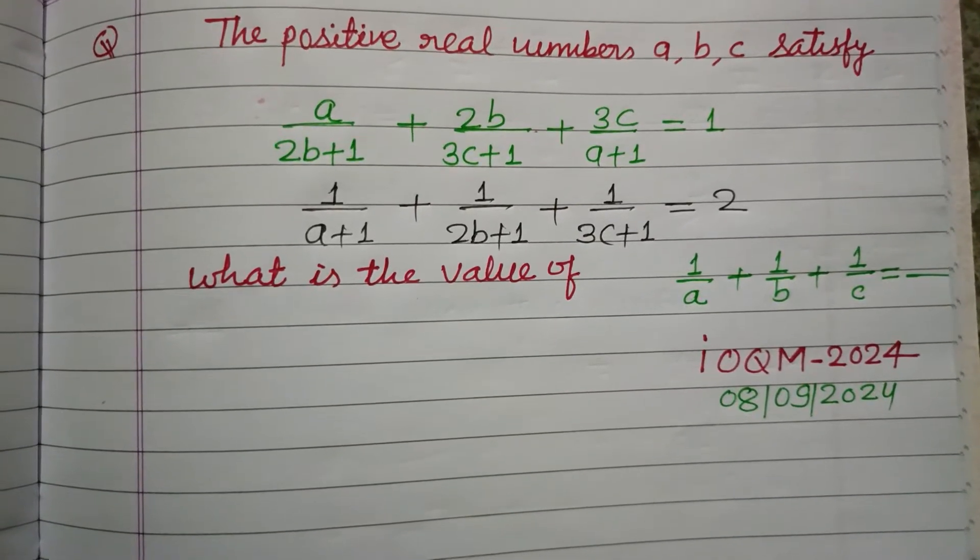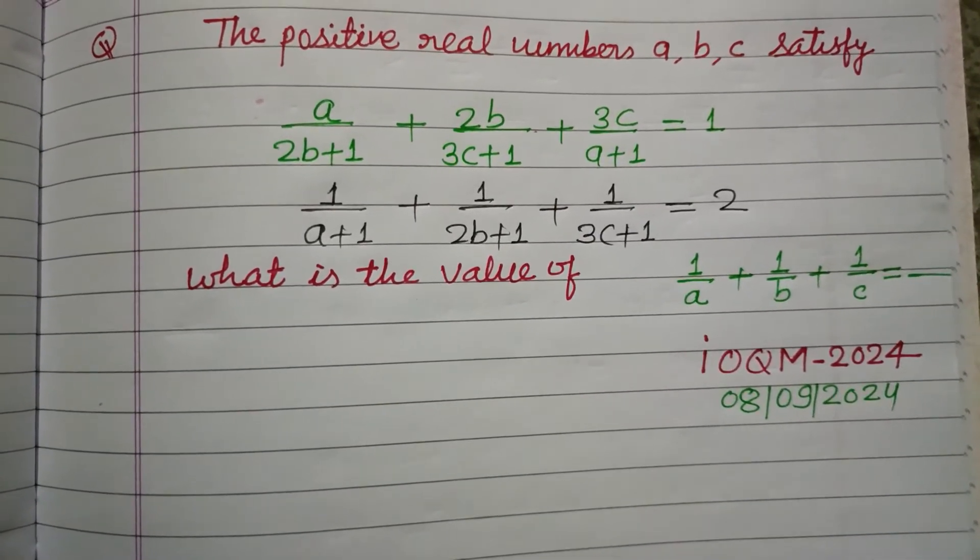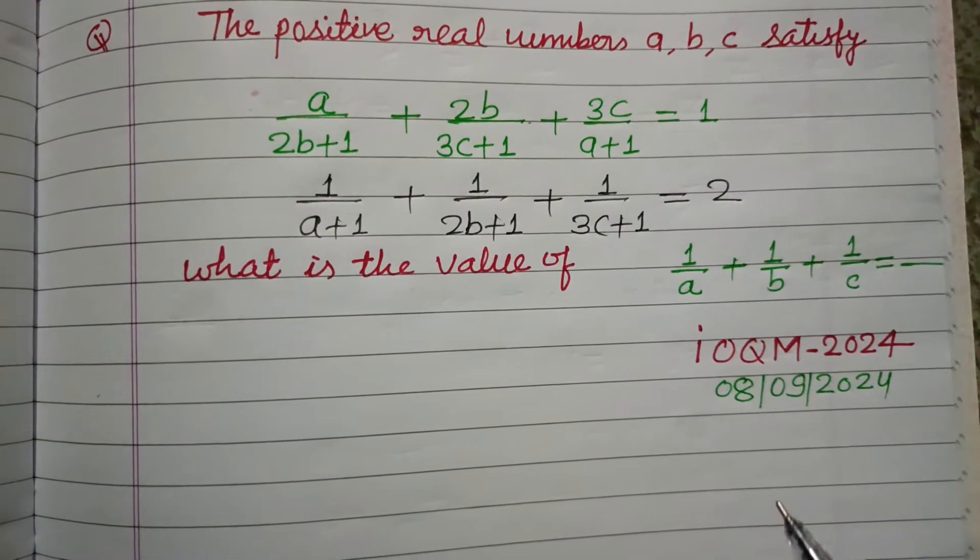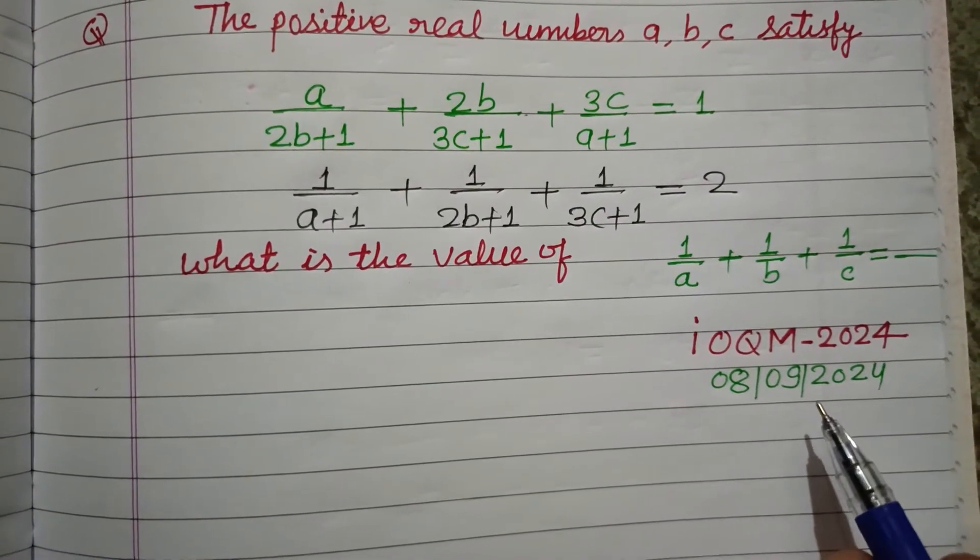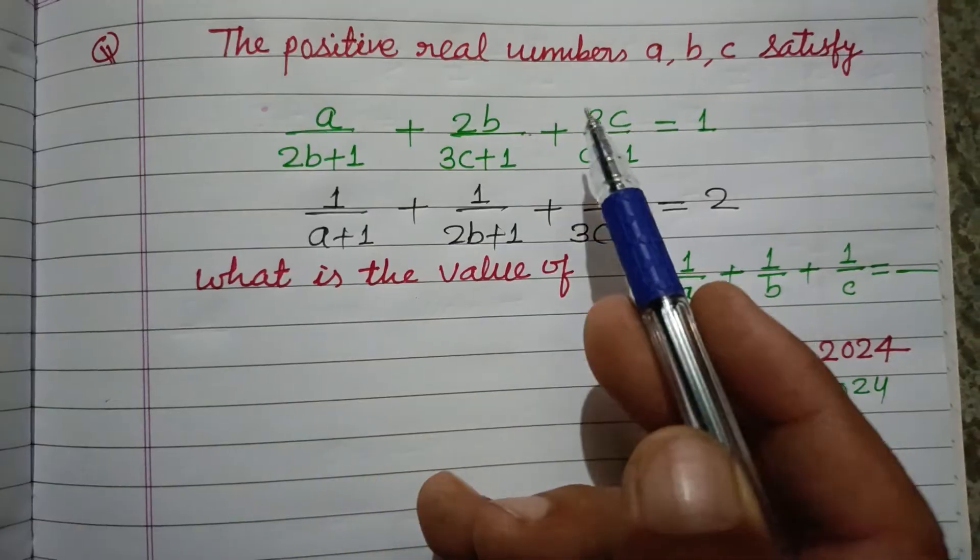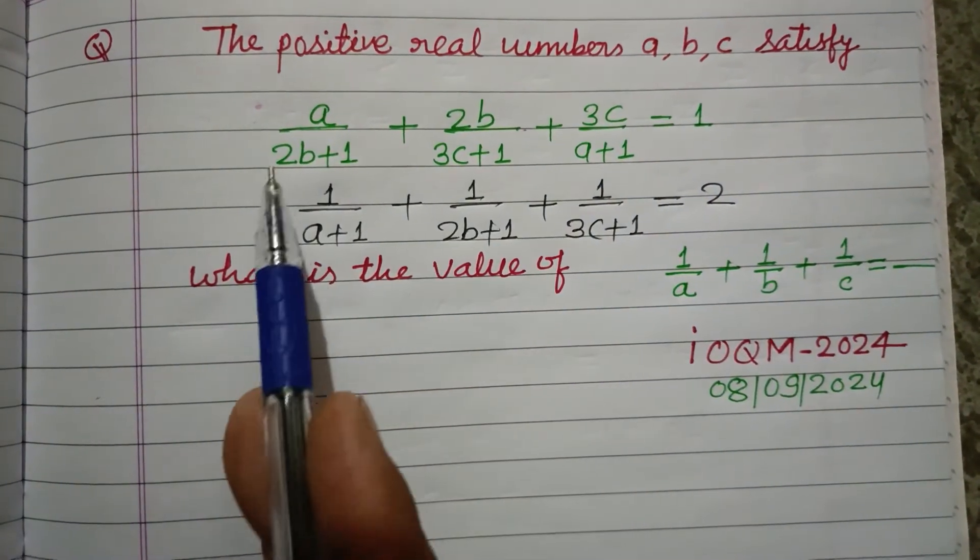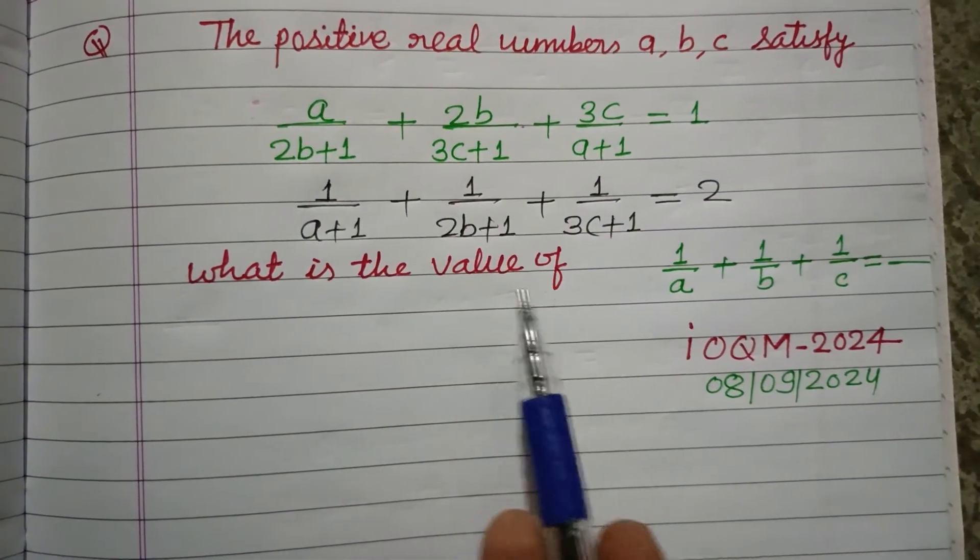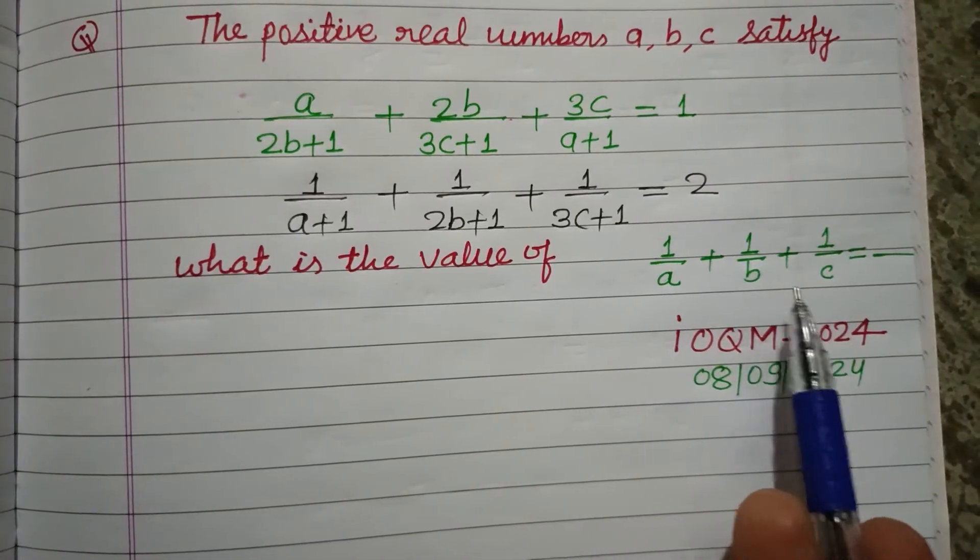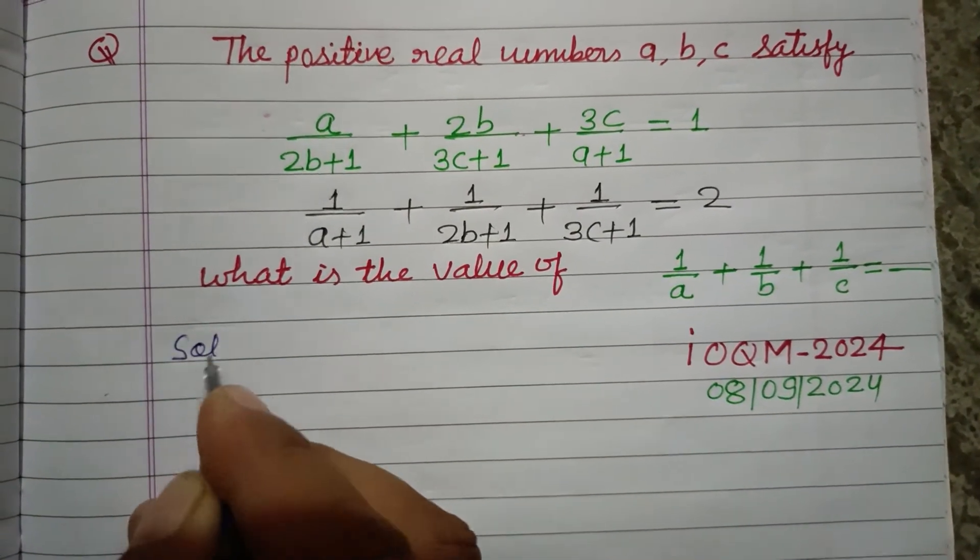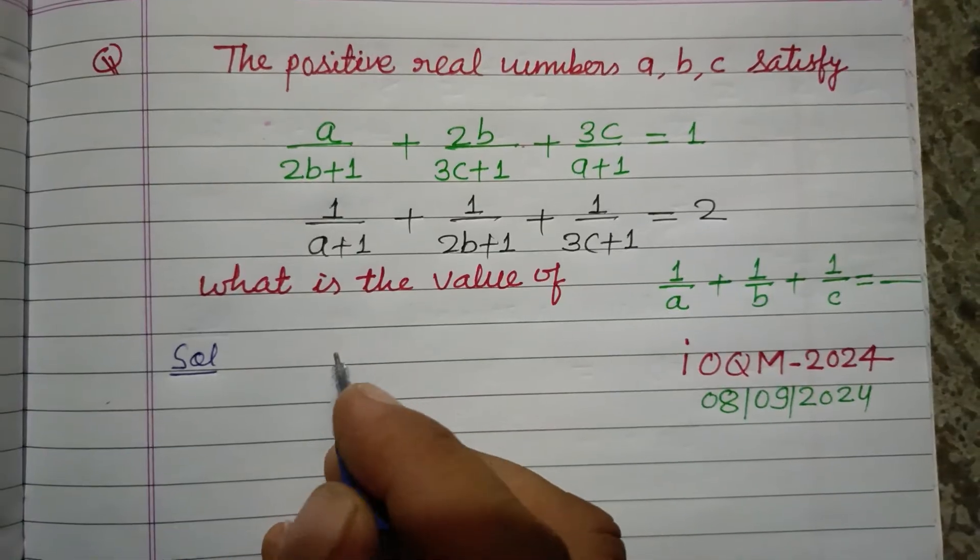Hello viewers, warm welcome to this YouTube channel. This is a question from IOQM 2024 held on 8 September 2024. The positive real numbers a, b, c satisfy the given equation. What is the value of 1 upon a plus 1 upon b plus 1 upon c?